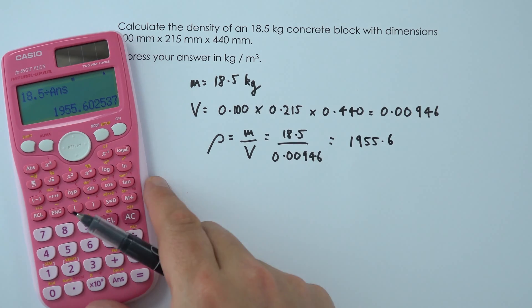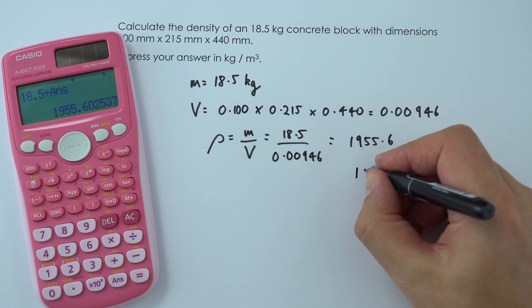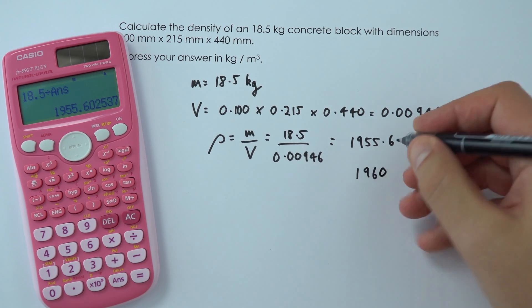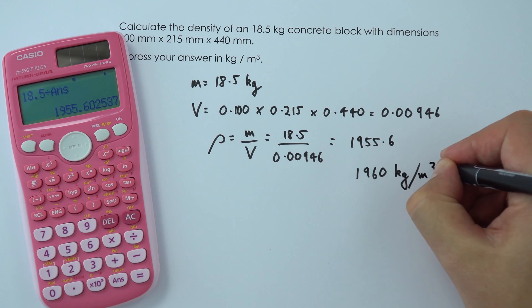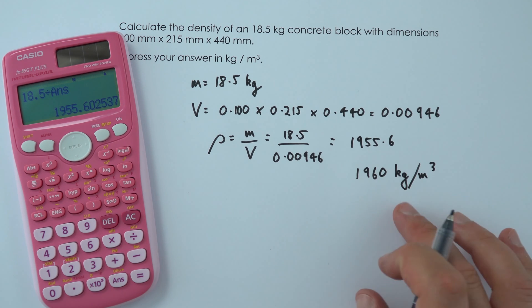And I'm just going to give my final answer to three significant figures, like we had in our raw data up here, so that's 1,960 kilograms per cubic meter. And that sounds about reasonable. If you had a cubic meter of this concrete, it would weigh about two tonnes, so it's about twice the density of water.